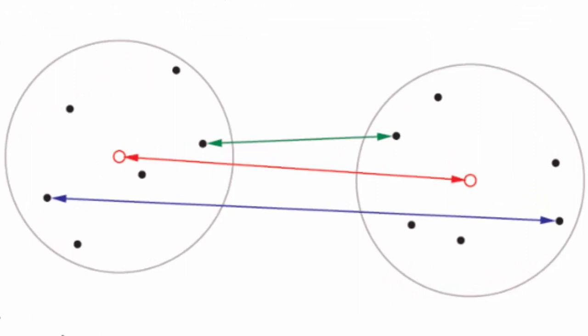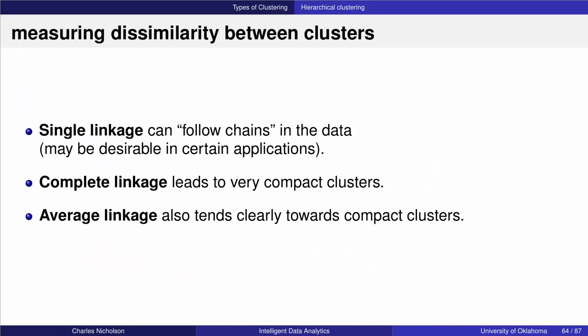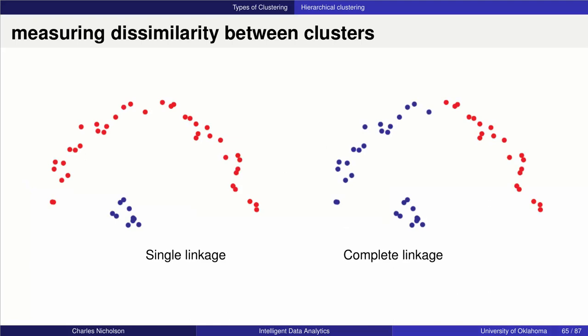You have a picture that looks like this: the red arrow shows the centroid technique — the distance between the centroids. The green arrow shows the single linkage technique — the distance between the two closest points. The blue arrow represents complete linkage. Average linkage is based on the average of all pair distances. Each technique has characteristics: single linkage can produce what are called chains, complete linkage can lead to very compact clusters, and average linkage also tends to produce compact clusters.